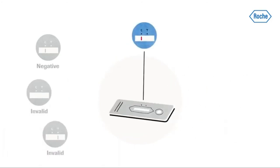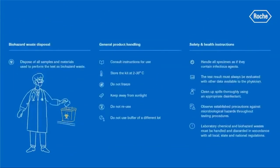In the case of a positive result, a colored line appears in the lower section of the result window. This is the test line T. Even if a test line is very faint or not uniform, the test result should be interpreted as a positive result.